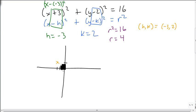Then we just move our radius 1, 2, 3, 4 to the right, up 1, 2, 3, 4, to the left 1, 2, 3, 4, and down 1, 2, 3, 4.